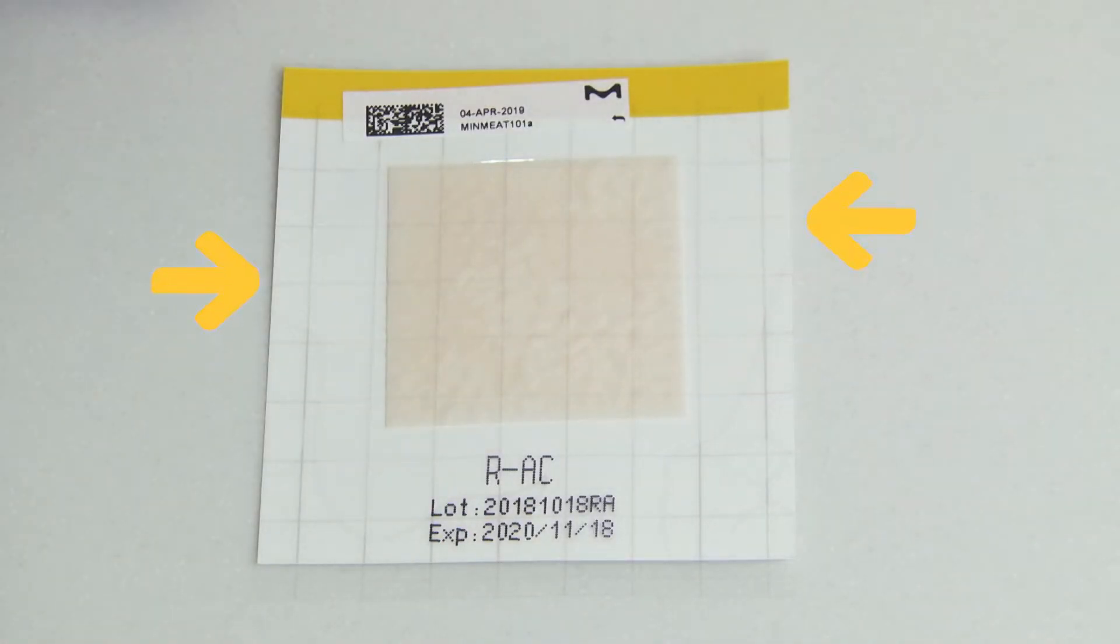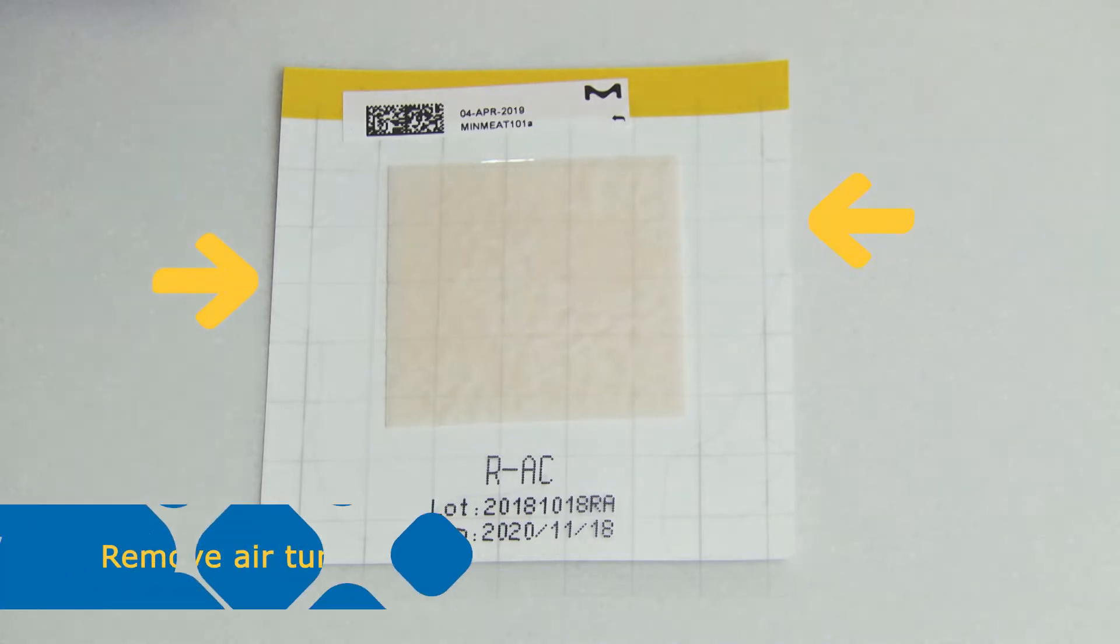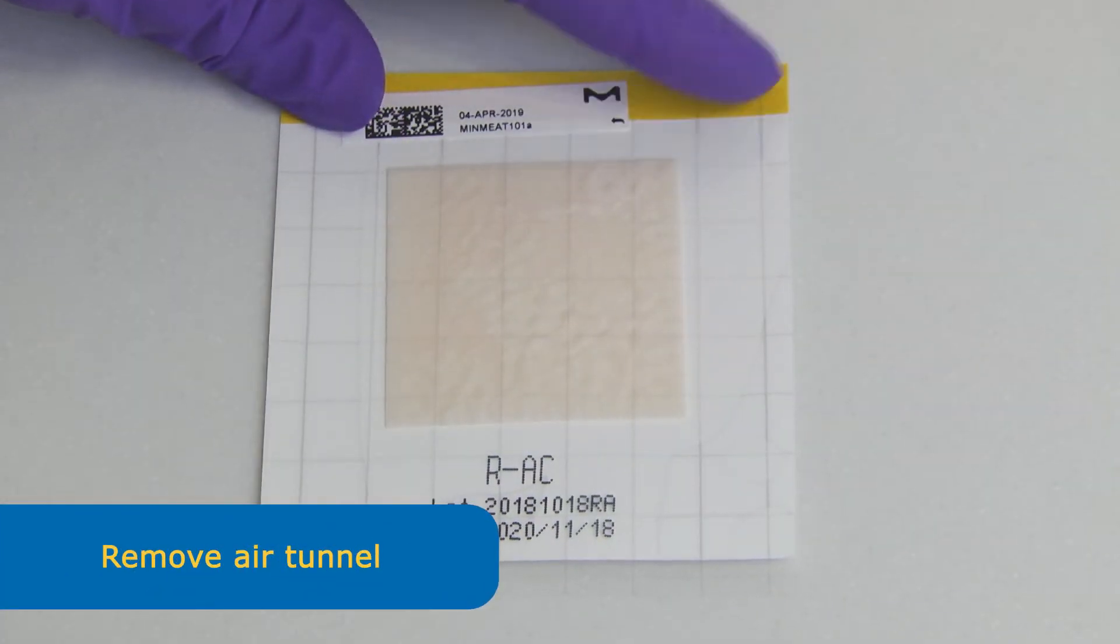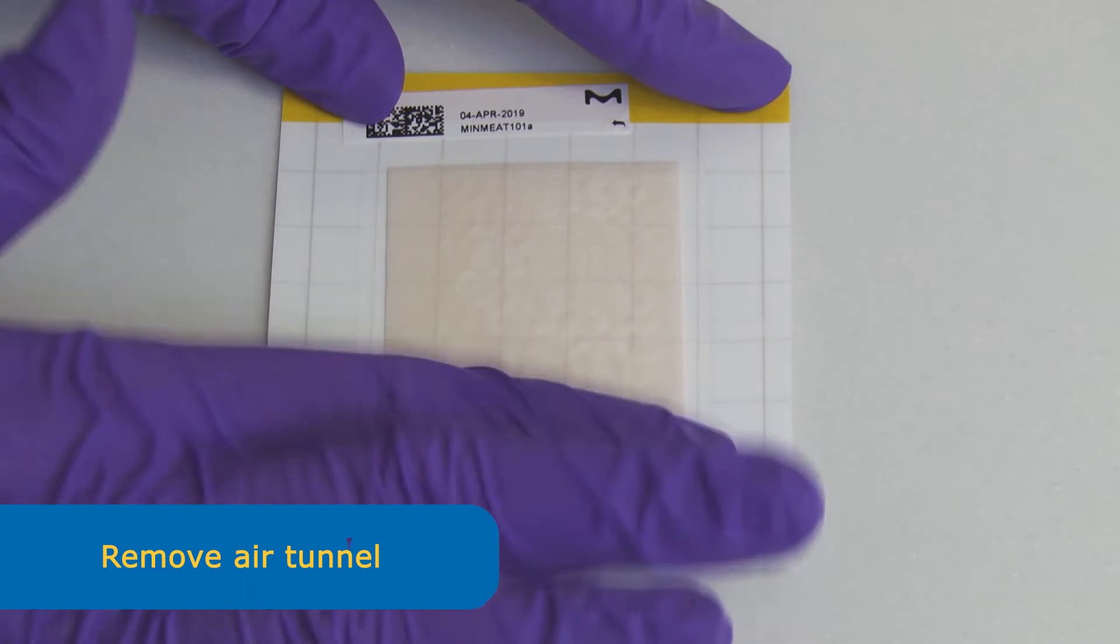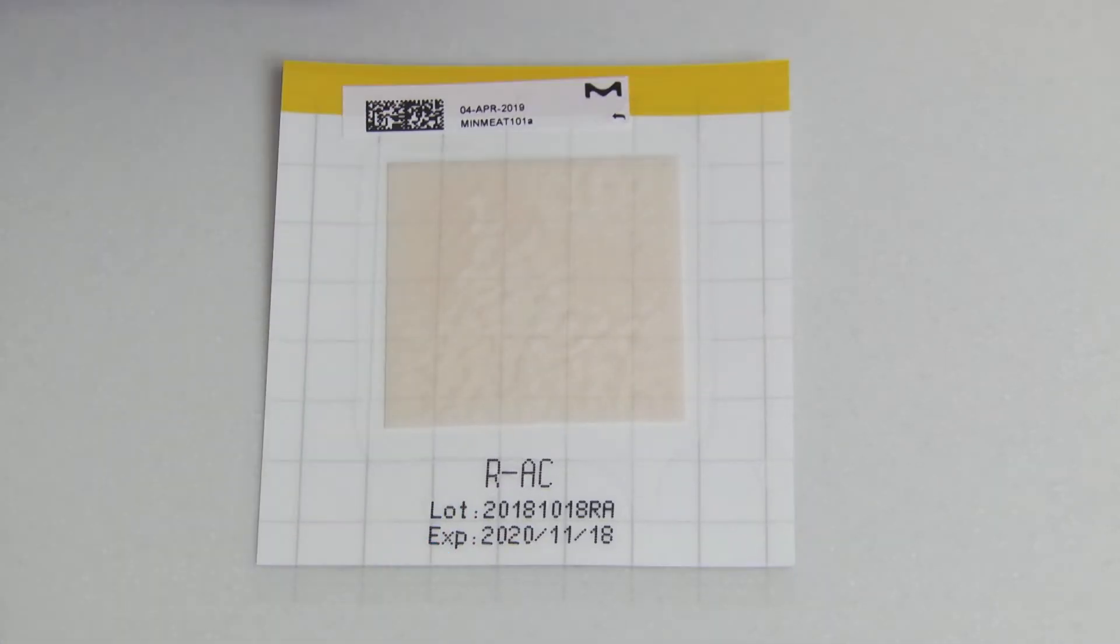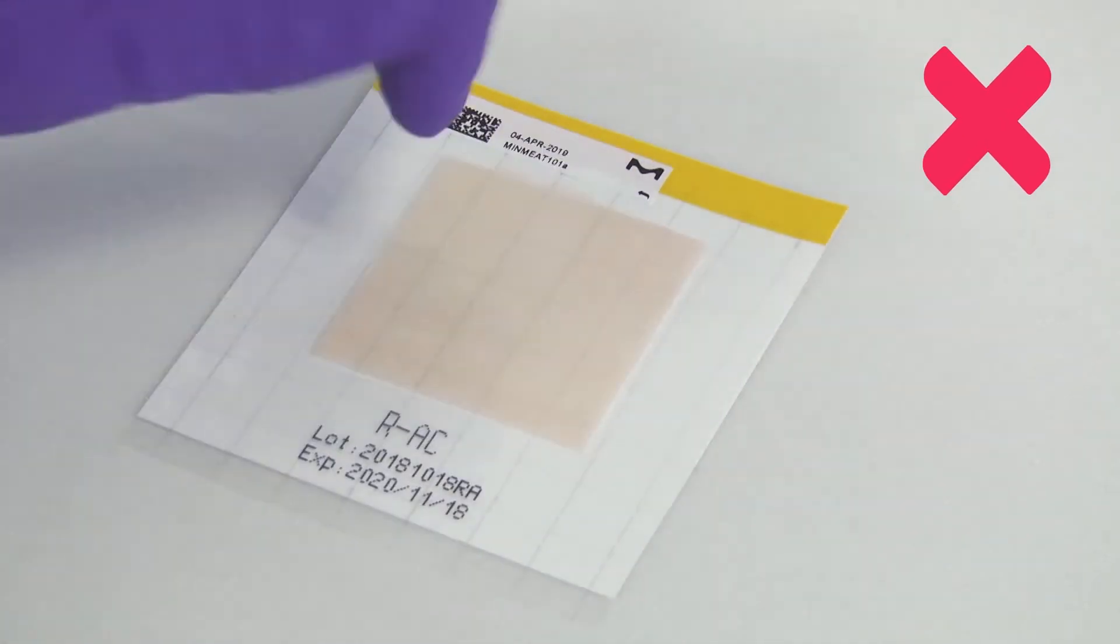Check the closed pad for any air pockets that reach to the end of the pad. They could allow air to enter and lead to the pad drying out. Do not apply pressure on the pad to close it or to remove air tunnels.